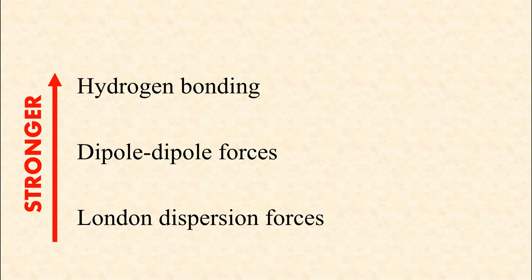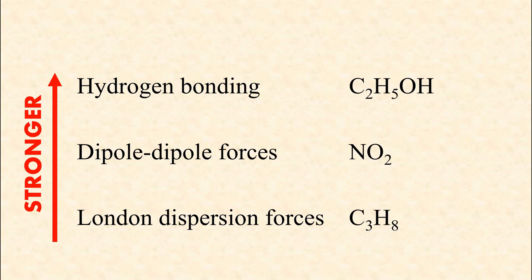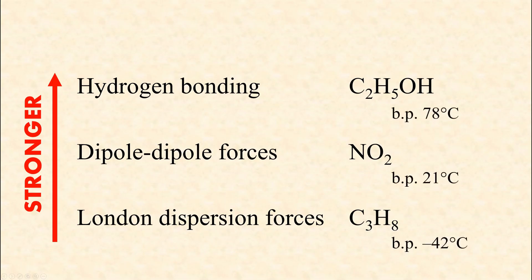If we compare three substances — C3H8 (propane), nitrogen dioxide, and C2H5OH (ethanol) — we would expect the one with only London dispersion forces to have the lowest boiling point, the one with hydrogen bonding to have the highest boiling point, and the one with dipole-dipole forces to be somewhere in the middle. If we look up their boiling points, we'd find this is exactly the case. So if you know the forces a substance has, you can usually predict their relative boiling points. The stronger the intermolecular force, the higher the boiling point.